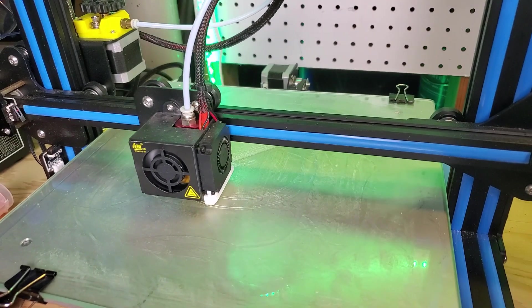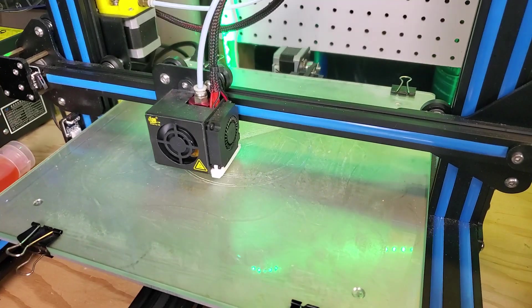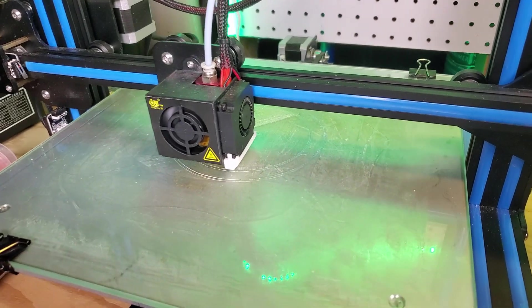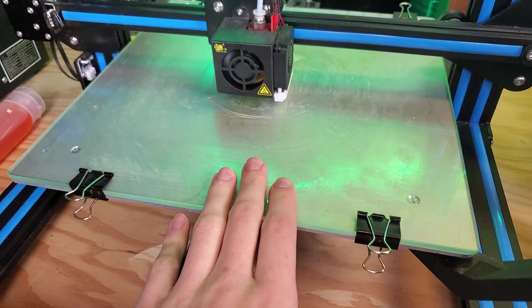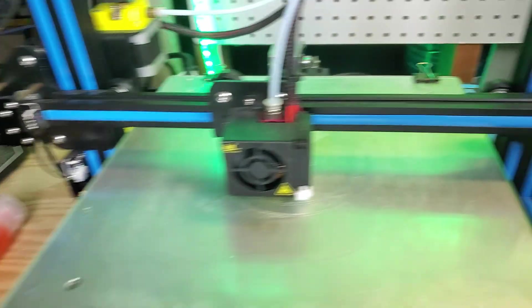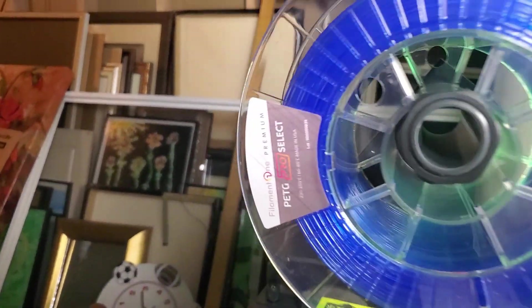We're back here and it's pretty much about halfway done with the first layer. Everything's looking pretty good so far. It's sticking down really well to the bed, and again, this is a totally cold bed. You can see here zero, totally cold bed, and we're printing with Filament One PETG.